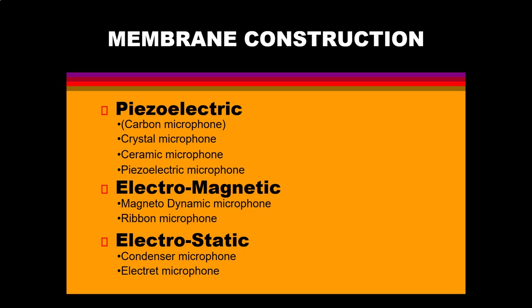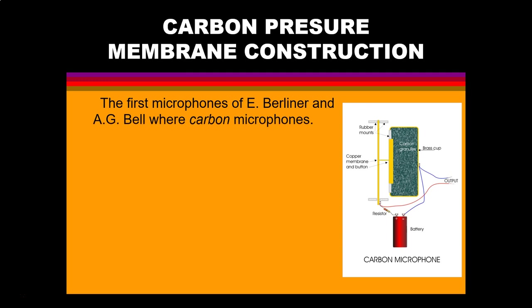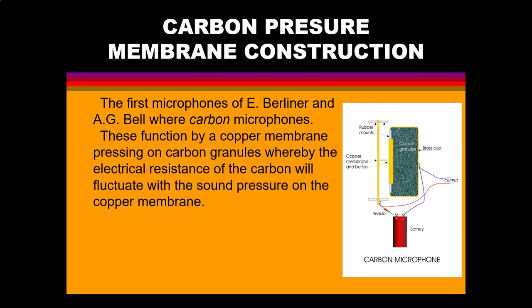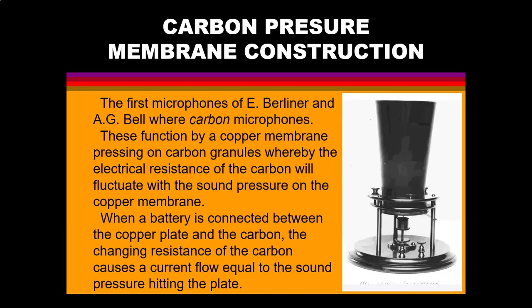The first type is the carbon pressure membrane construction. These are no longer used in pretty much any mainstream usage. The first of these microphones were designed by E. Berliner and Alexander Graham Bell, where they used carbon membrane pressing on carbon granules, whereby the electrical resistance of the carbon was fluctuated by the sound pressure on the copper membrane. When a battery is connected between the copper plate and the carbon, the changing resistance causes a current flow equal to the sound pressure hitting the plate.